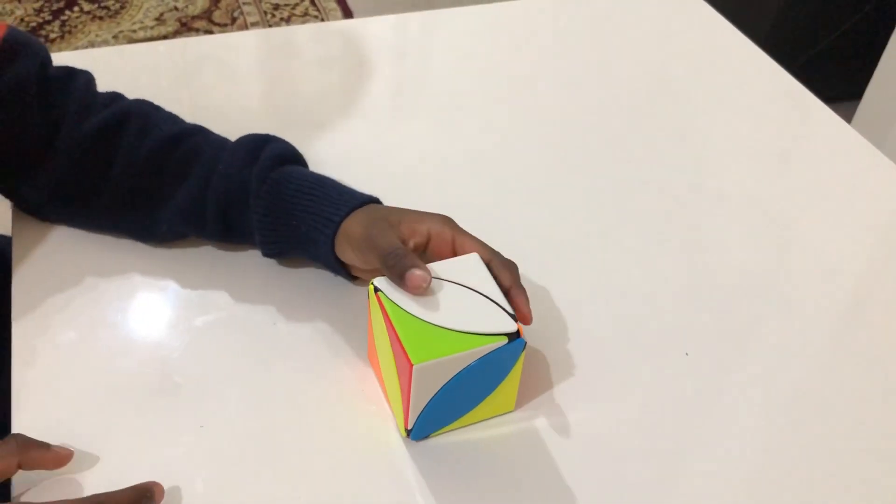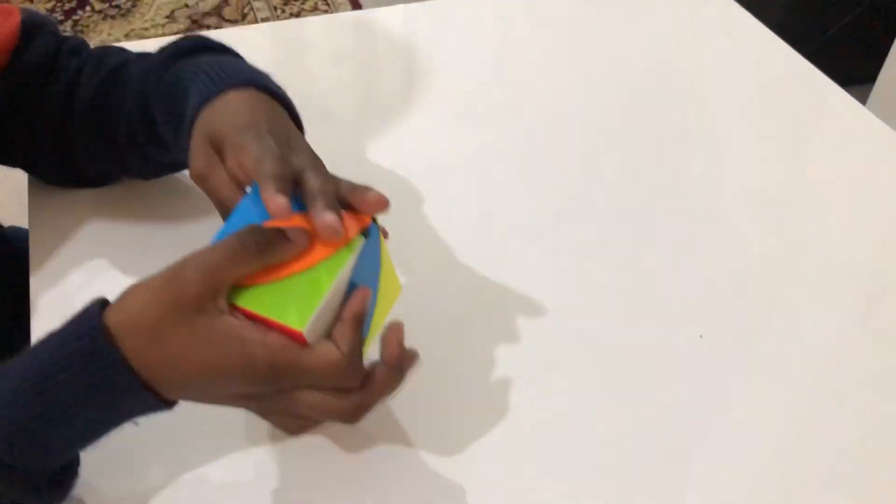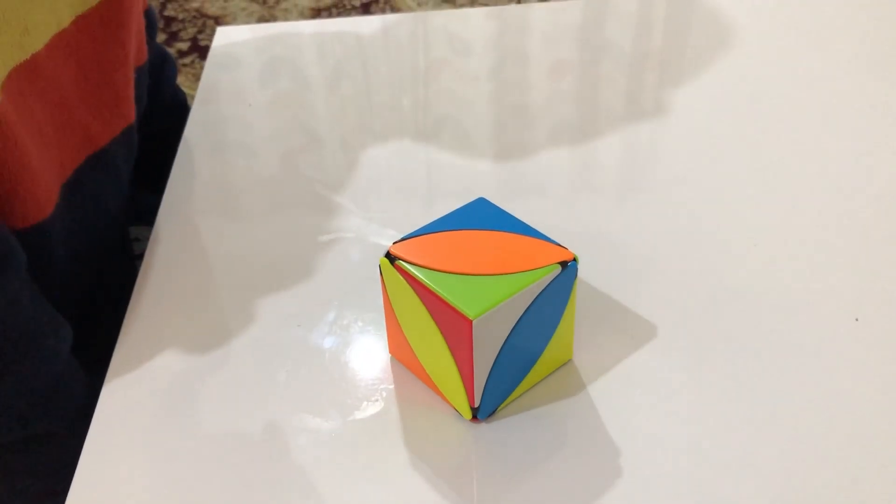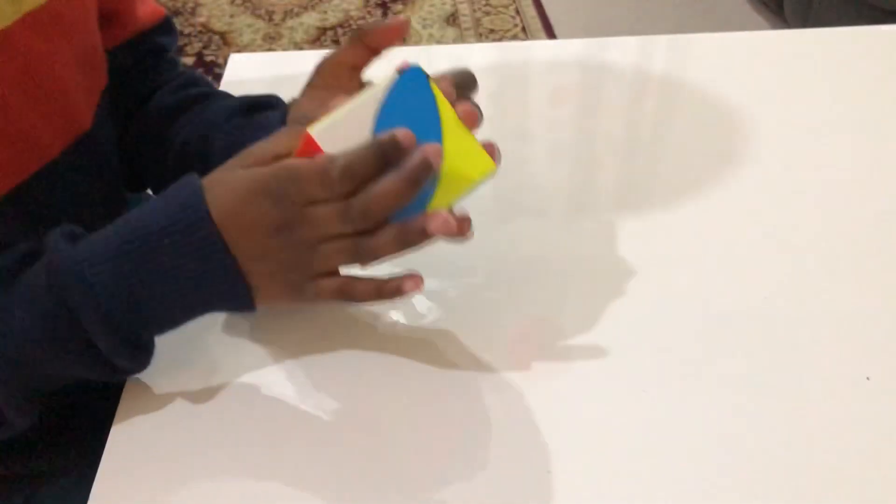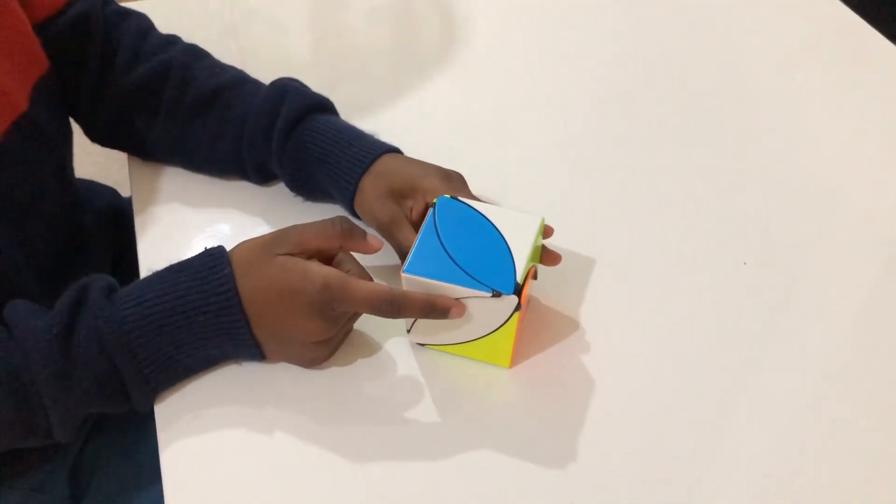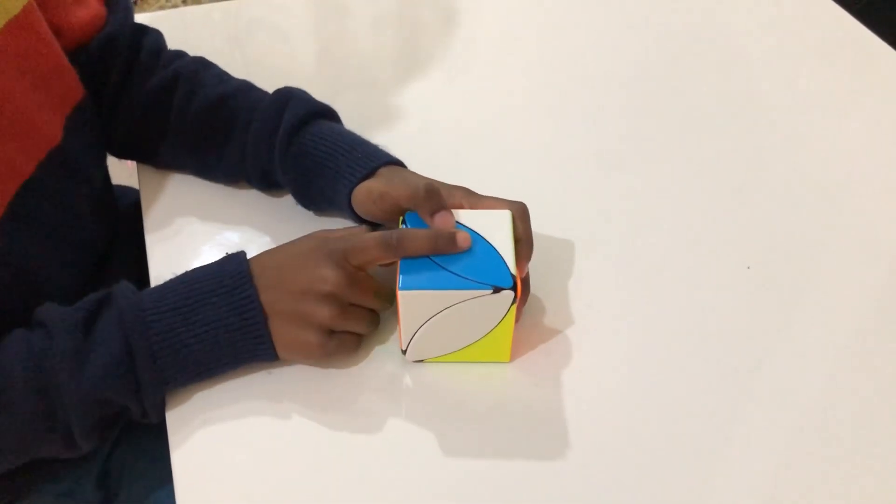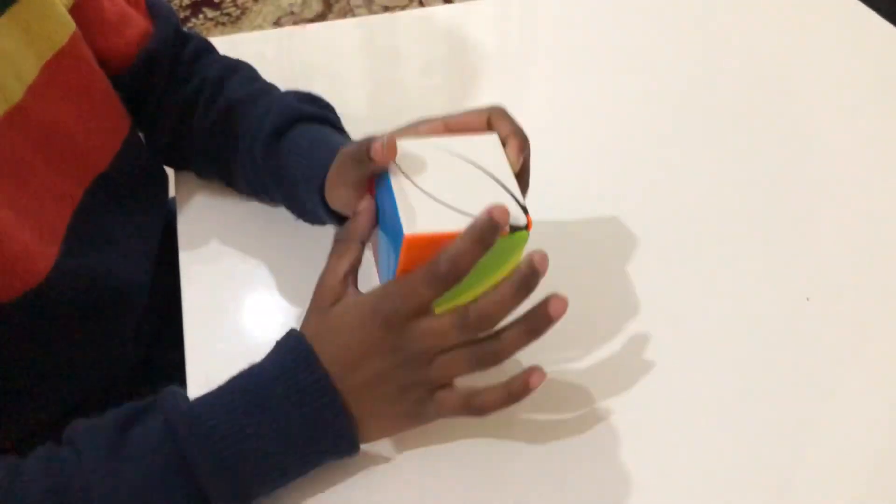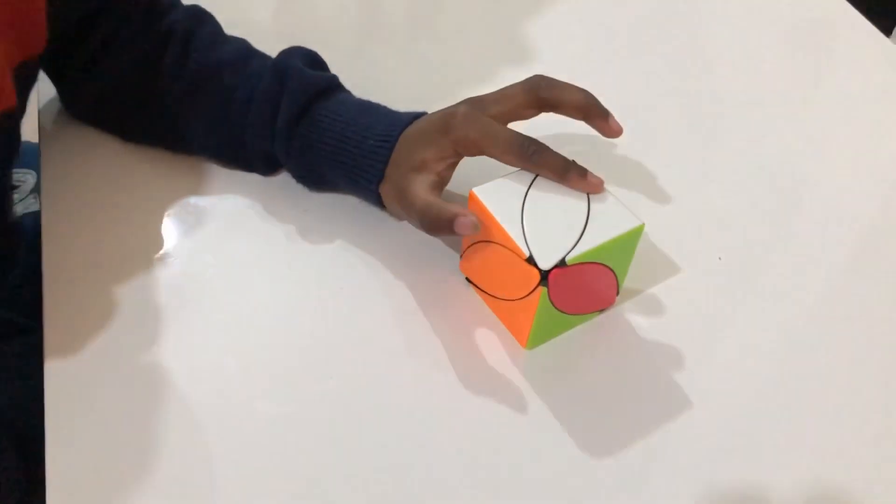Now hide this piece. Now bring the other corner piece on the top. Now bring this hidden piece back to normal position. Now white side is solved.